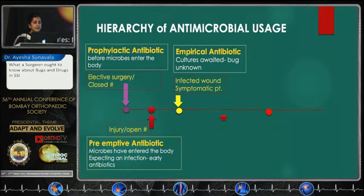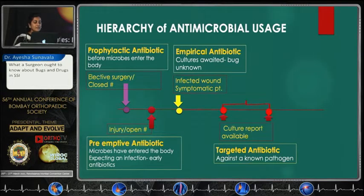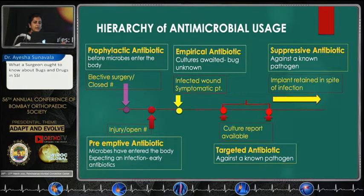Empiric antibiotics are given in the case of an infected wound, a symptomatic patient when you may have sent cultures or you don't know what the bug is. Once the culture report is available, you are targeting the bug — this is targeted antibiotic usage against a known pathogen. And finally, when you choose to retain an implant in spite of infection, you are using suppressive antibiotics against a known pathogen.